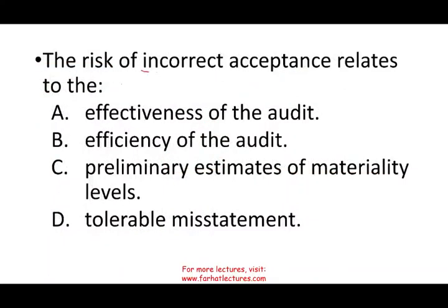Let's take a look at this question: the risk of incorrect acceptance — what does it relate to? Is it A, effectiveness of the audit; B, efficiency of the audit; C, preliminary estimates of the materiality level; or D, tolerable misstatement? When dealing with incorrect acceptance or incorrect rejection, we are dealing with either effectiveness or efficiency, so we can eliminate C and D right away and focus on A and B.